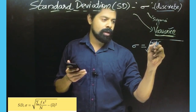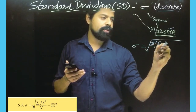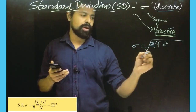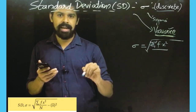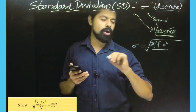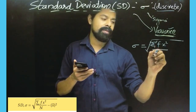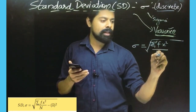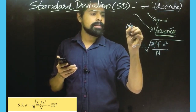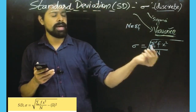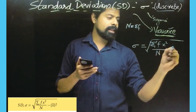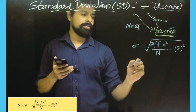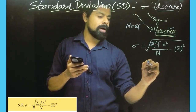The formula involves f into x squared, which is sigma fx². This is divided by small letter n, where n is the total frequency — also written as sigma f, capital N. So sigma f equals n, the total frequency. And x-bar is equal to sigma fx by sigma f.